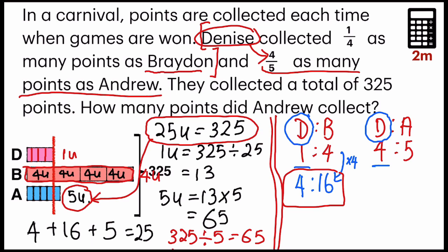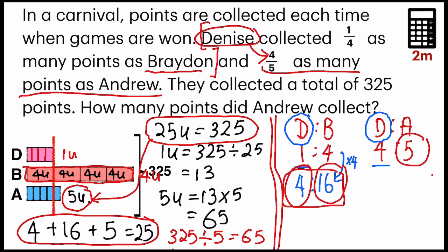The rest of the steps are the same as before. Find the total units by adding four plus 16 plus five together to get 25. Then link it to the total they gave us, which is 325. From there, you can choose to find one unit, or straight away divide by five to get the answer of 65 points.